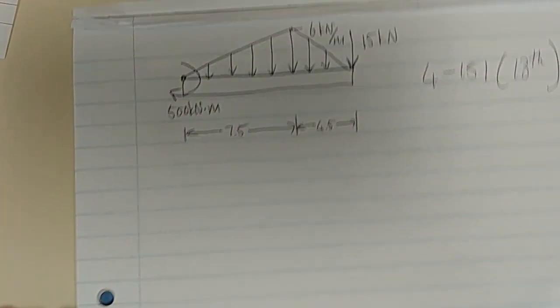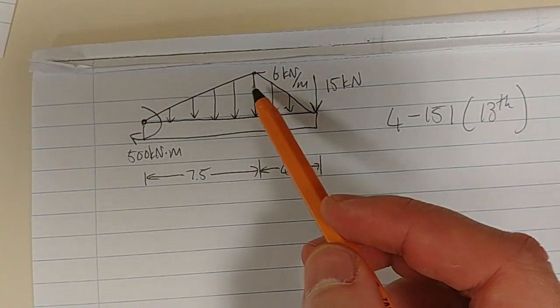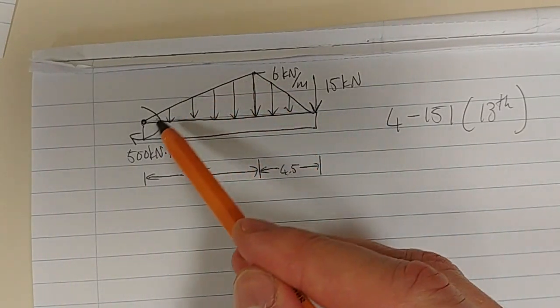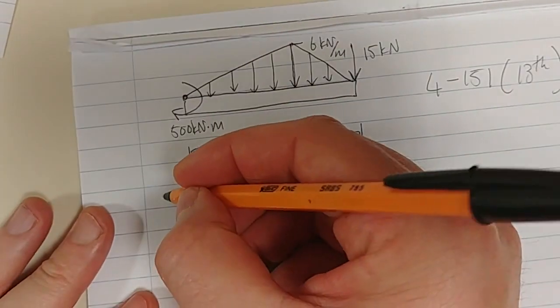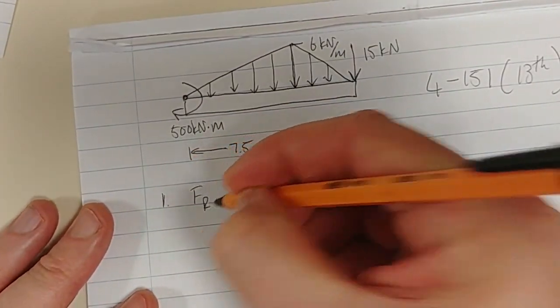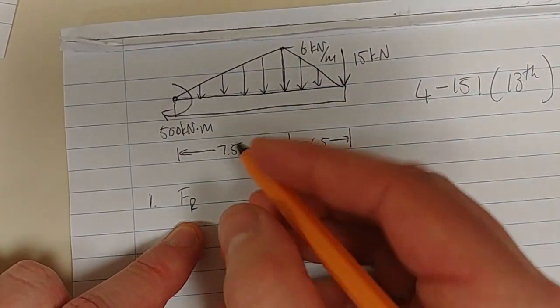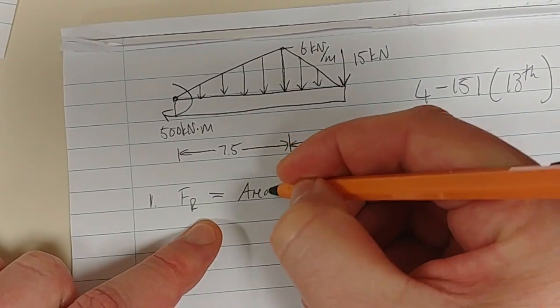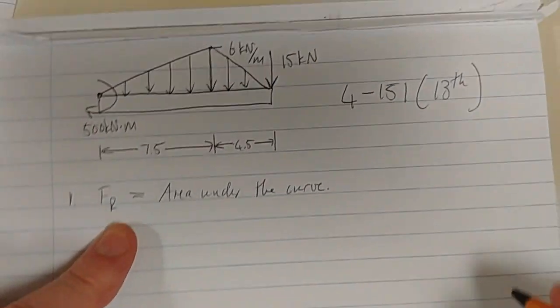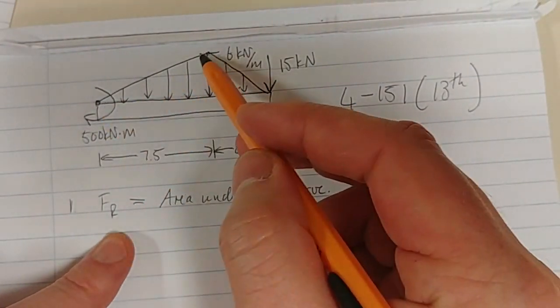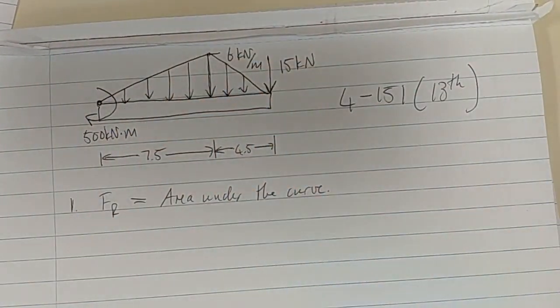By now you should know that to simplify the system, we calculate the area under the curve. The area under the curve gives us our resultant force. Step one: if we want to replace this by a single force, we need to calculate the area. If it's a simple shape like a triangle, it's straightforward - half base times height. But if it's an interesting shape, we need to use integration.